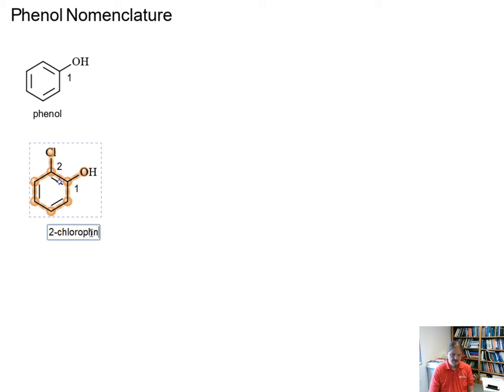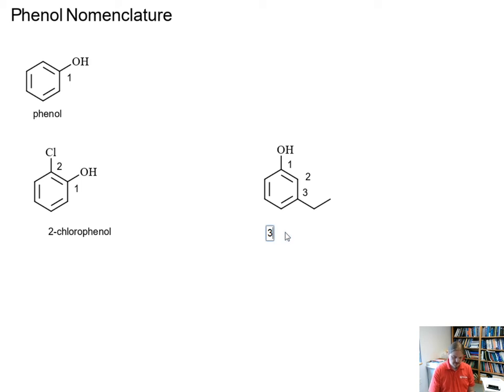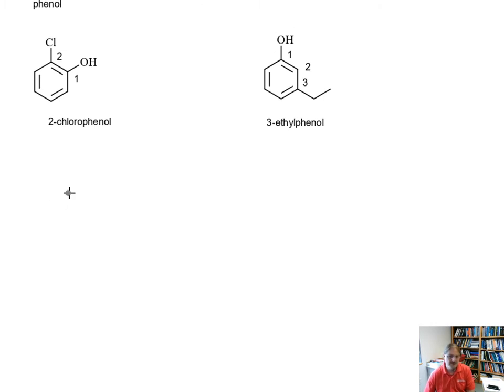If I have another example, numbering towards the other functional group, this is 3-ethylphenol. The phenol is always at position one, so there's no need to say 2-chloro-1-phenol or 3-ethyl-1-phenol.